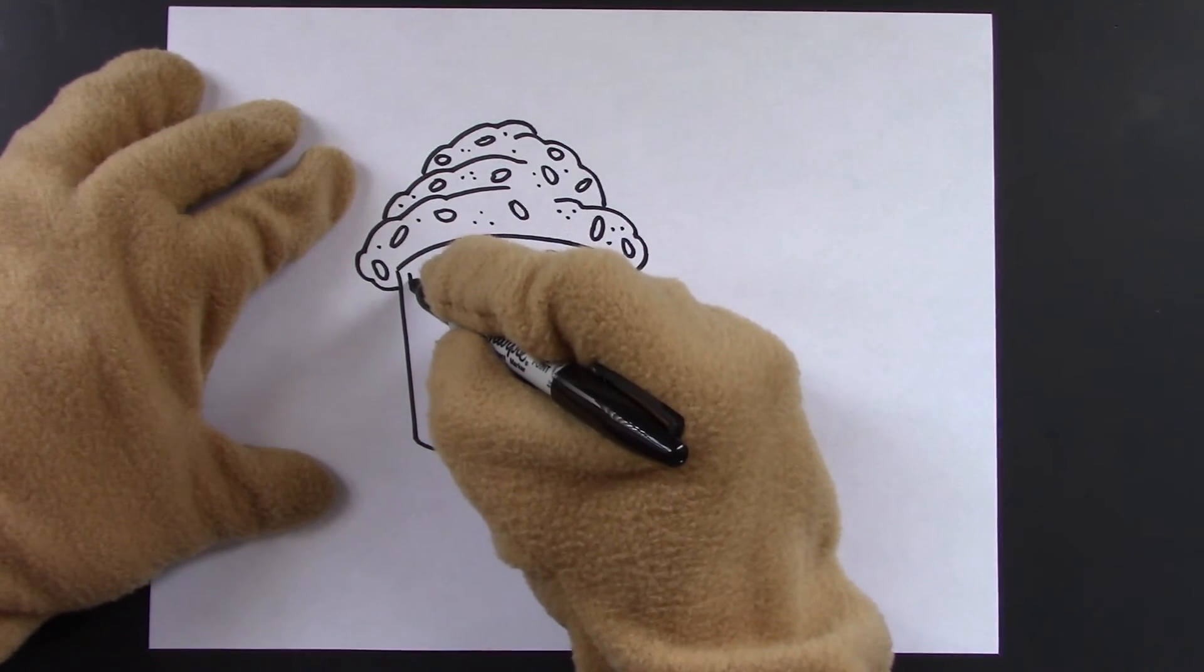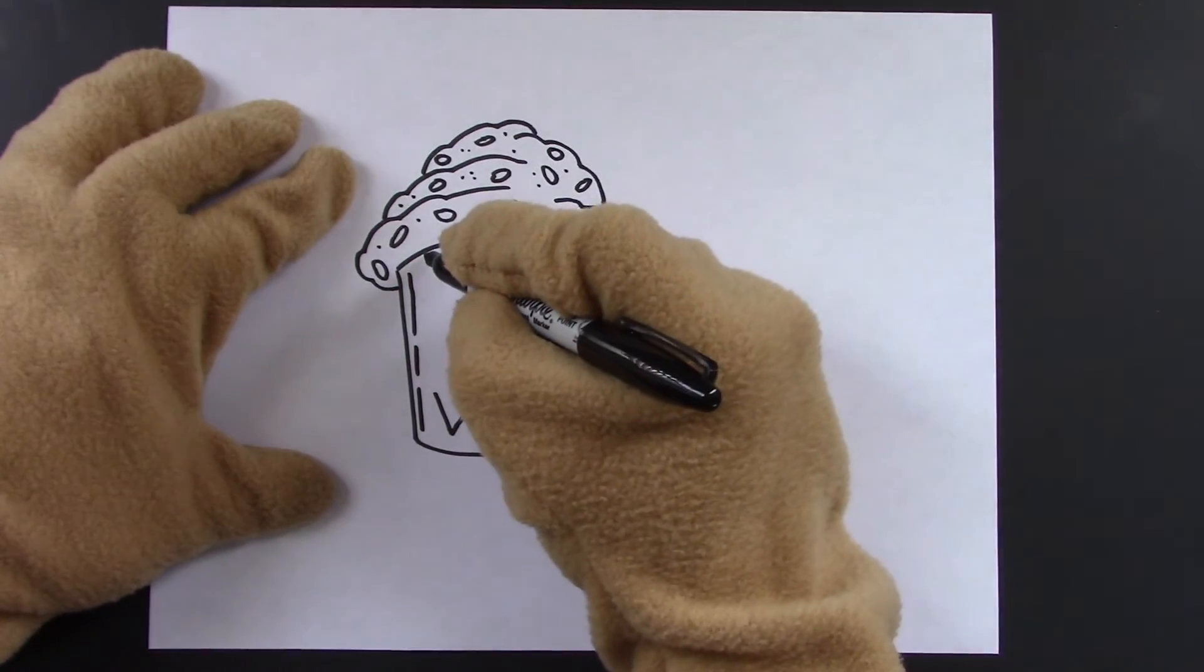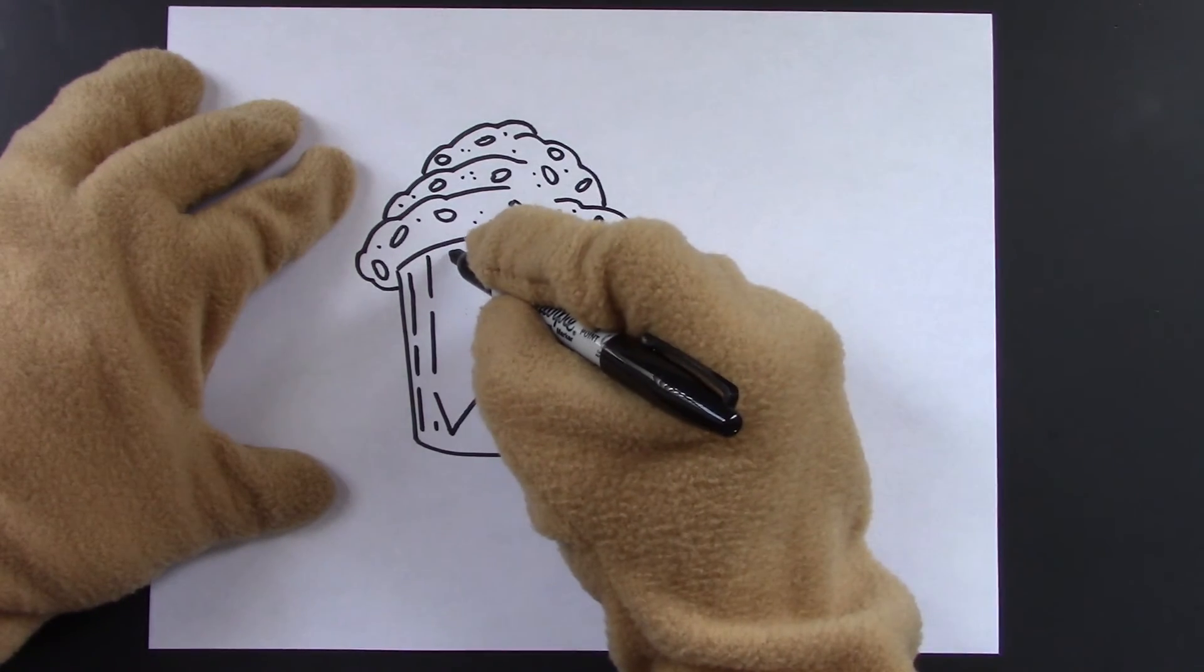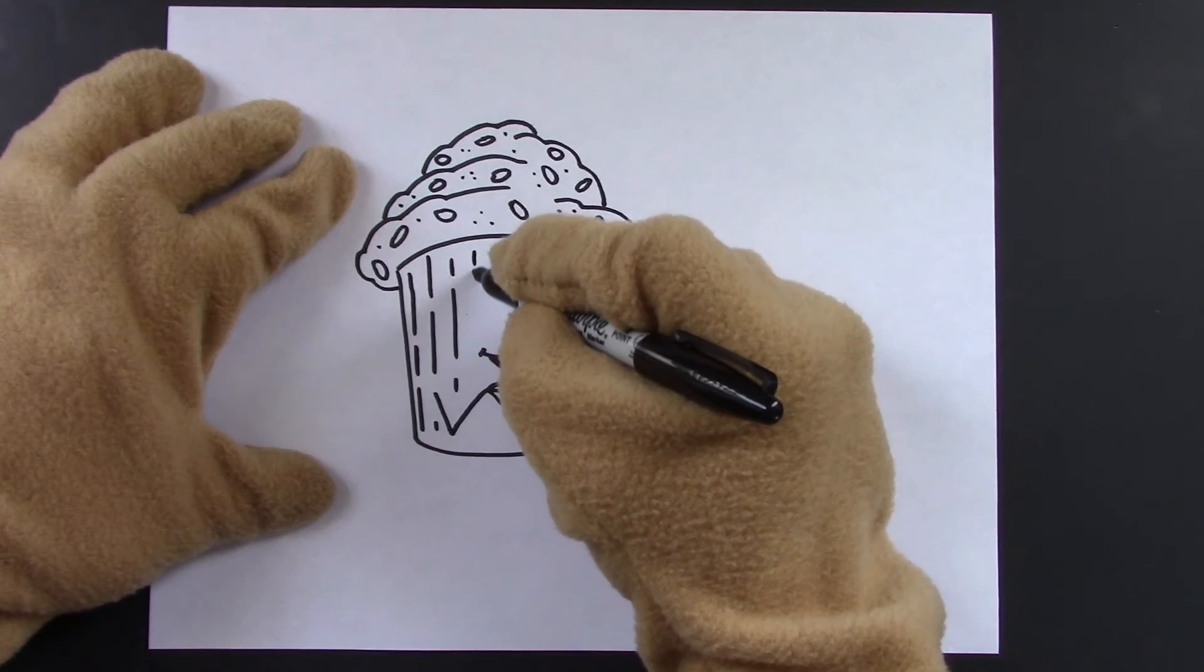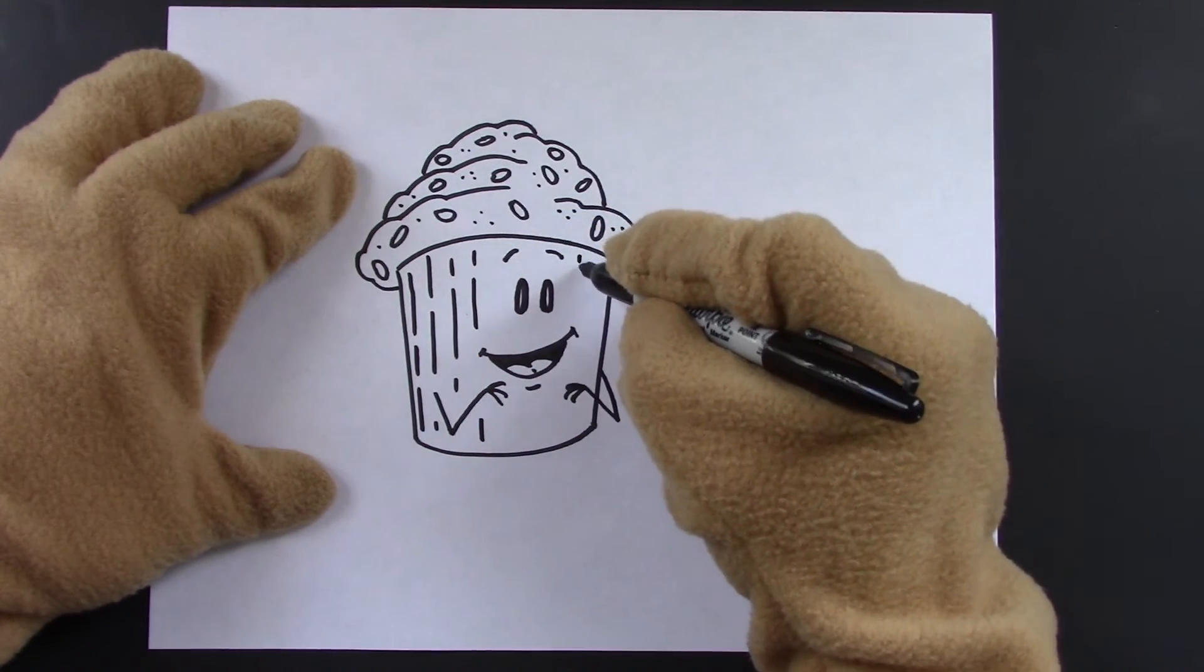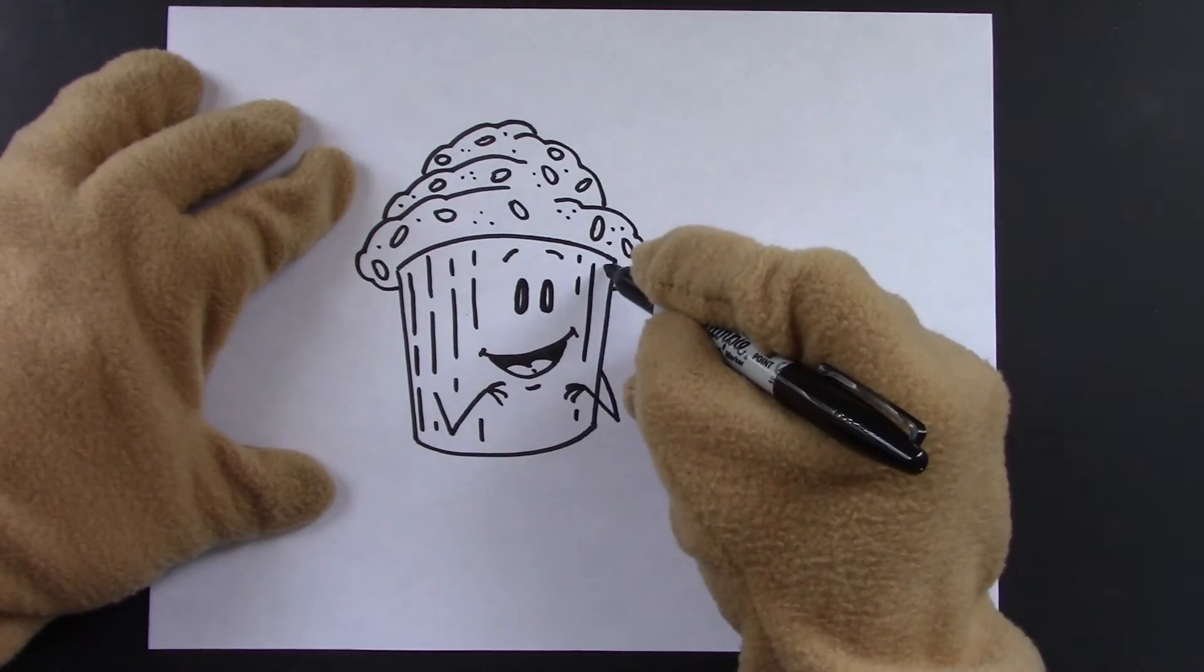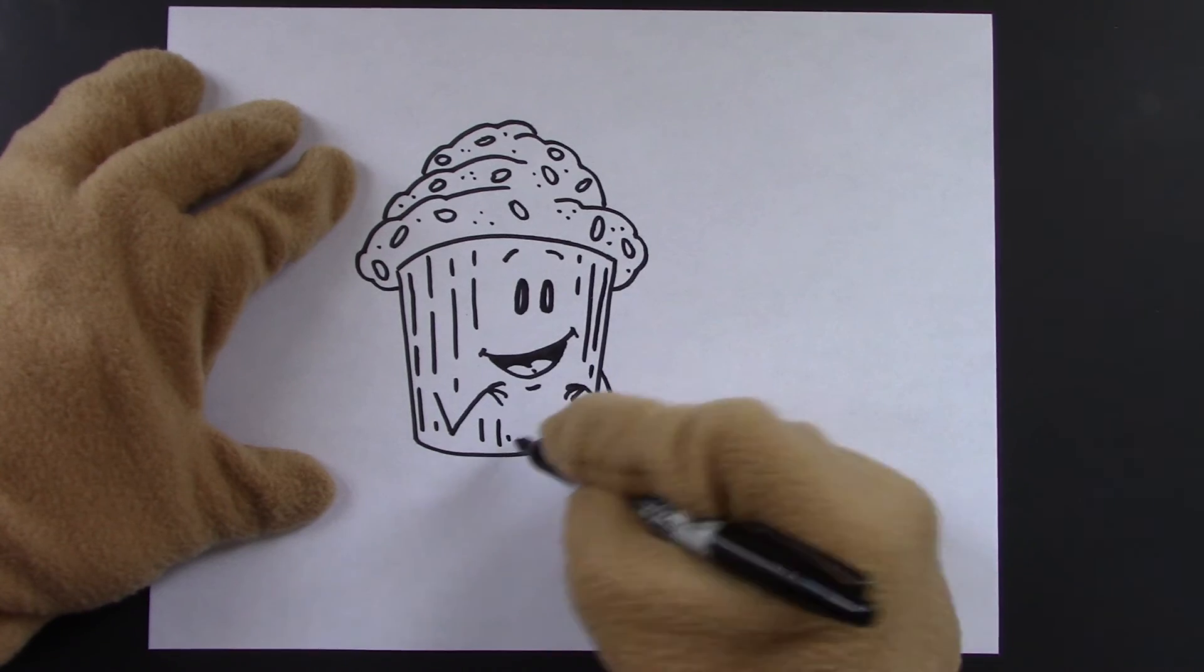Now the cupcake wrappers tend to have ridges in them or lines. So we'll do a few lines down the sides. Just keep doing it. There we go. Looking good. Now we'll try to avoid the face. So just keep putting lines on the other side now. And a few down here.